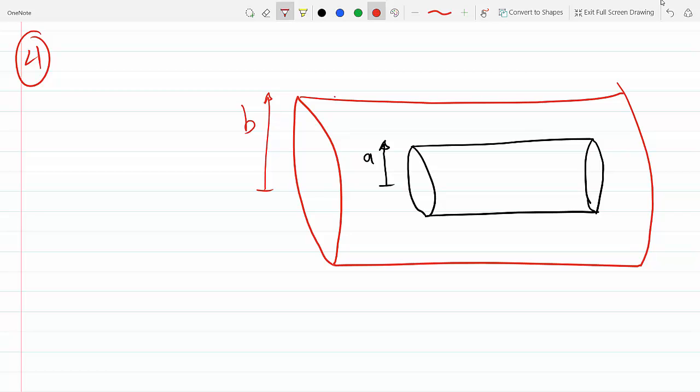And this is number four. And there's a potential difference delta V between them, keeping the entire setup neutral. And suppose those are infinite, which means they go to infinity in both directions. It says, find the capacitance of the system.